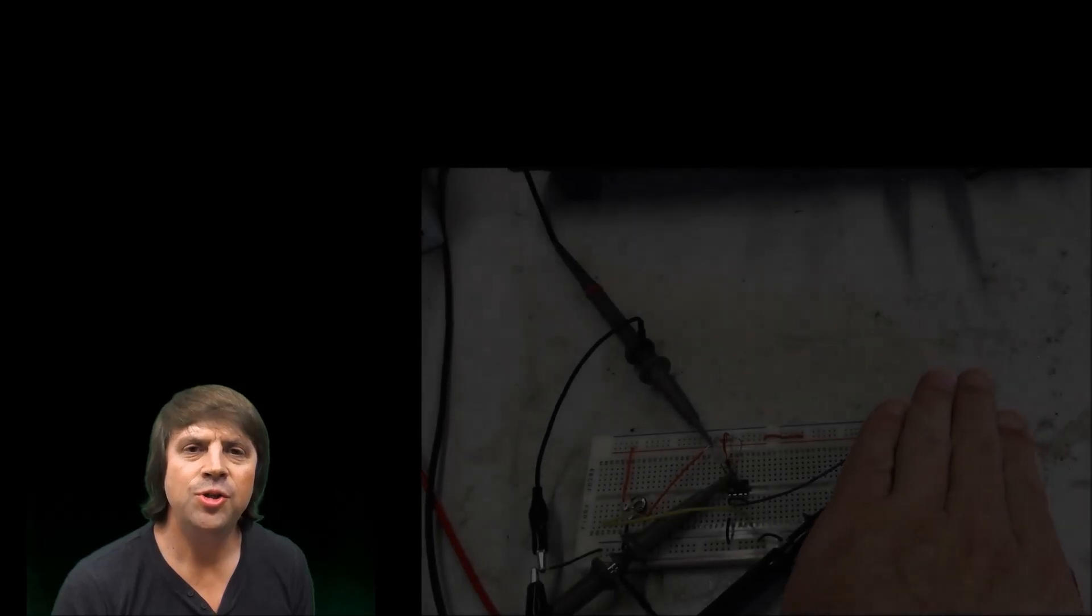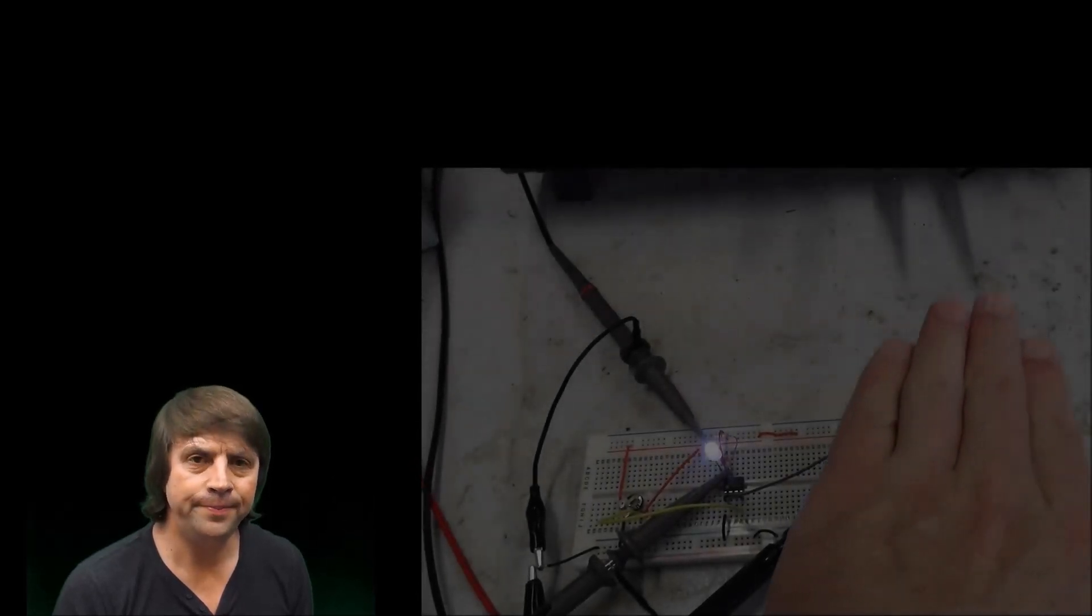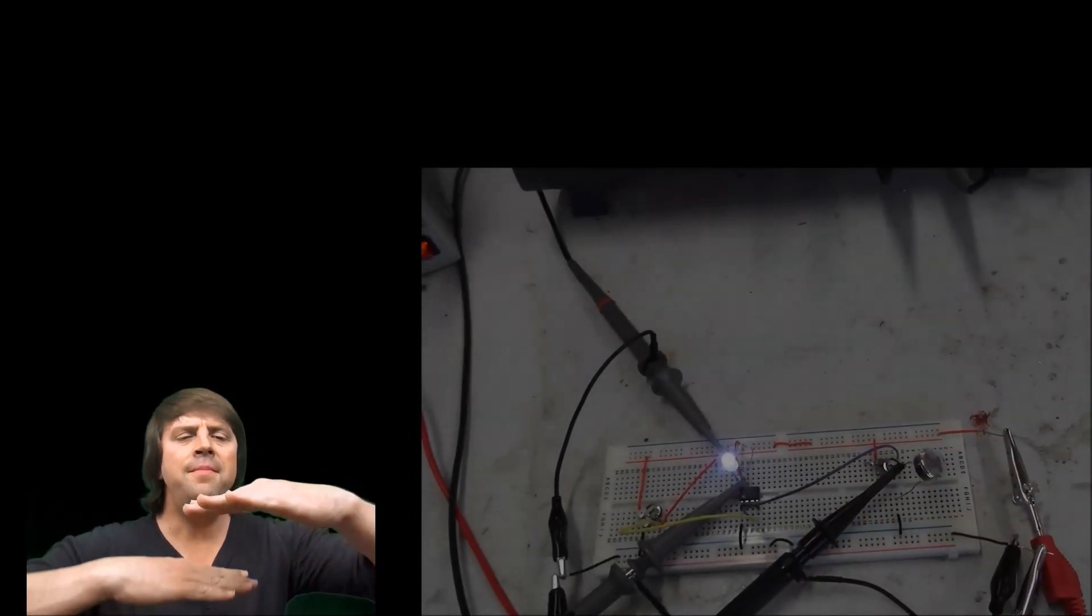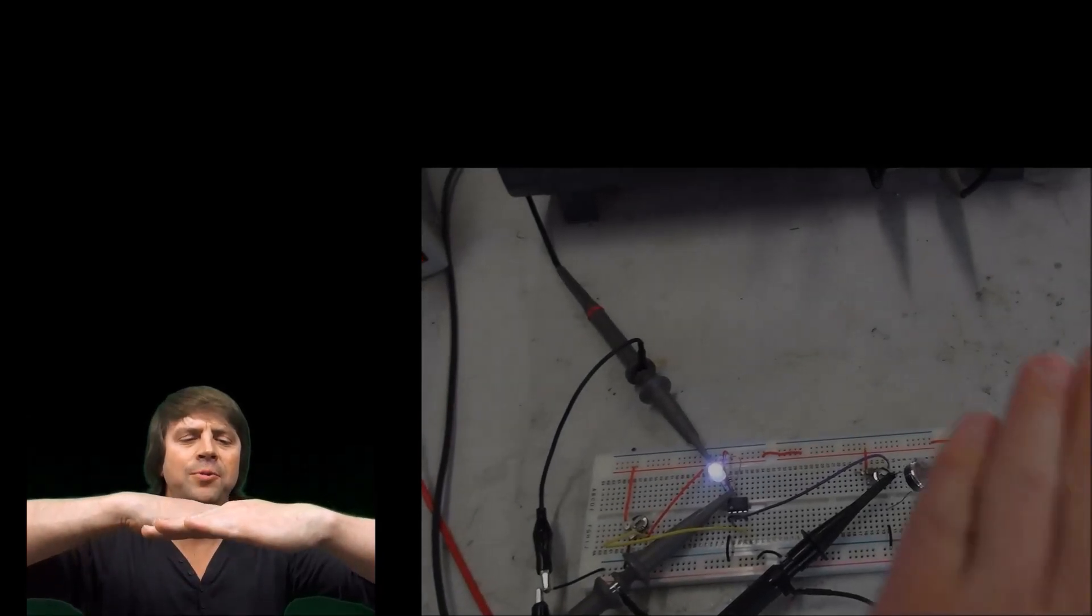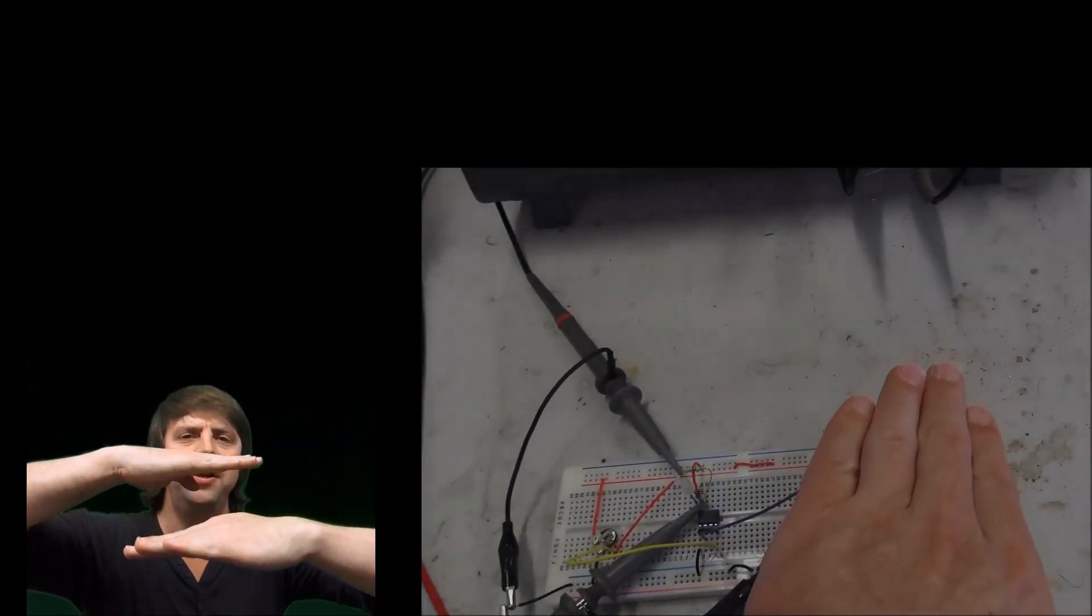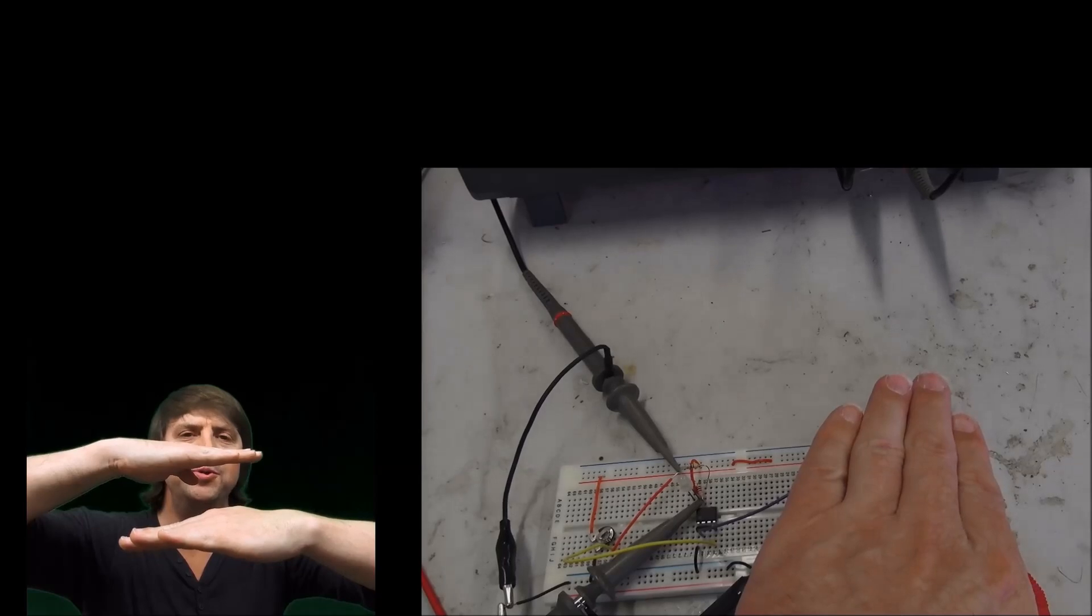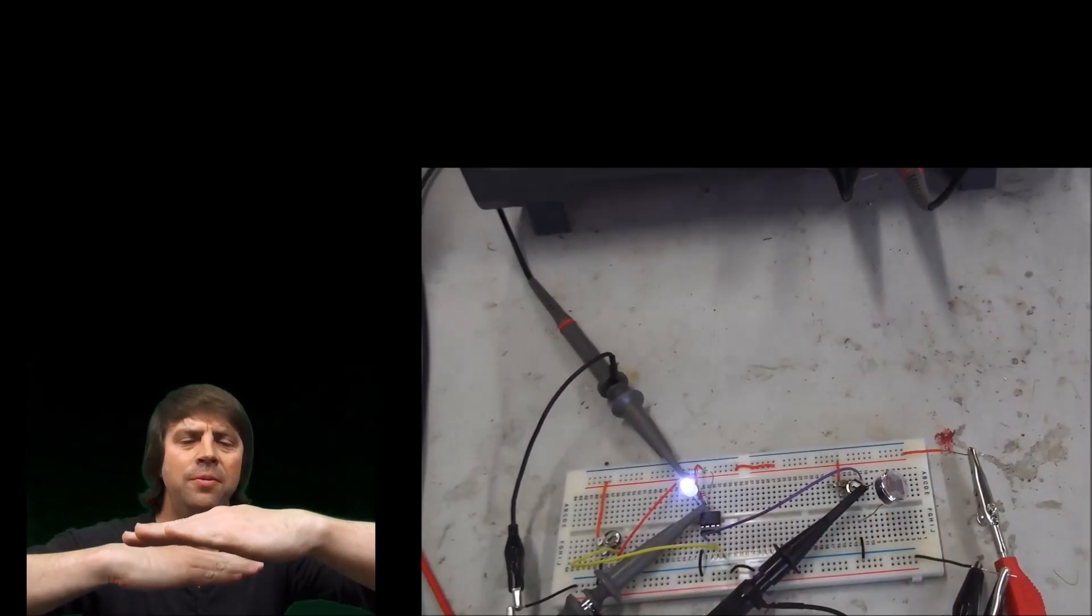If for example I connect the steady voltage, the threshold voltage, to the non-inverting input, every time the varying voltage goes above the non-inverting input the output will switch off and when it falls below it will switch on.